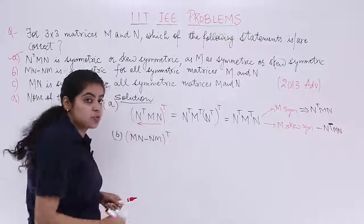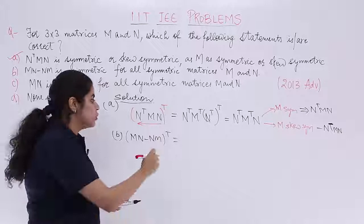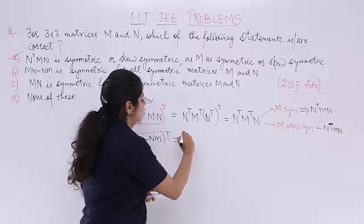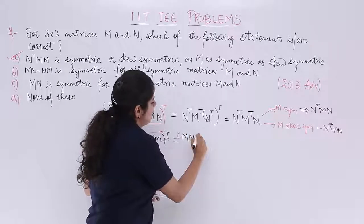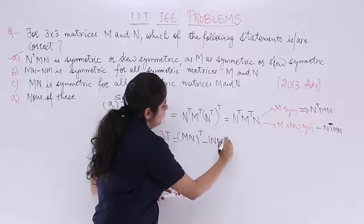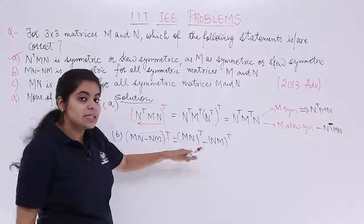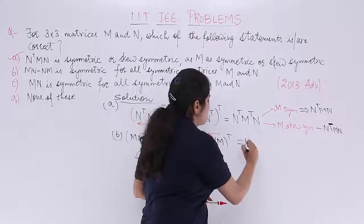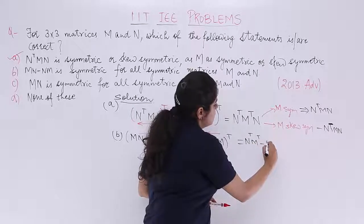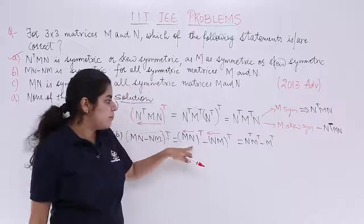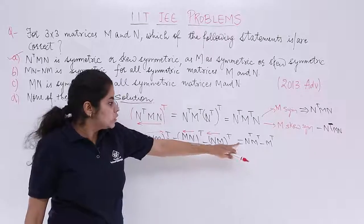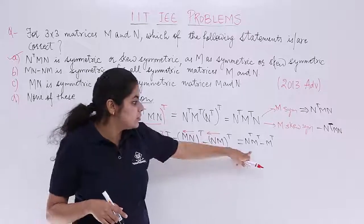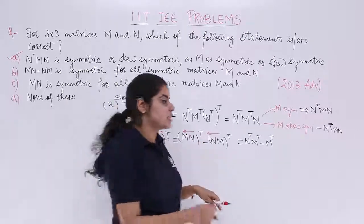And we take the transpose. When we take the transpose, you see that it is minus, so both will have the transpose effect. MN whole transpose minus NM whole transpose. Reversal order of multiplication in the transpose will be followed. So it becomes N transpose M transpose minus M transpose, and second term is there. First term is N transpose, and since reversal is there, M transpose N transpose.